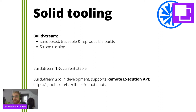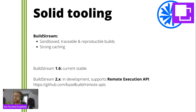BuildStream 1.6 is the current stable version, and that's what the Free Desktop SDK uses. There's a new version in development with many improvements. One improvement in particular is it standardizes on the remote execution API, which was introduced by the Bazel project. It gives a standard way to distribute builds across a build farm and cache the results. The cool thing is BuildStream and Bazel can work together on the same infrastructure — you'd only need to maintain one build farm and one cache.